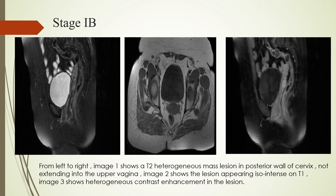This is an image of stage 1B. In image 1, a T2 heterogeneous mass lesion is seen in the posterior wall of the cervix, and the lesion is not extending into the upper part of the vagina. This is a T1-weighted image and the lesion is iso-intense, while in the post-contrast images, there is heterogeneous enhancement of the mass lesion, and stage 1B was assigned to the lesion.